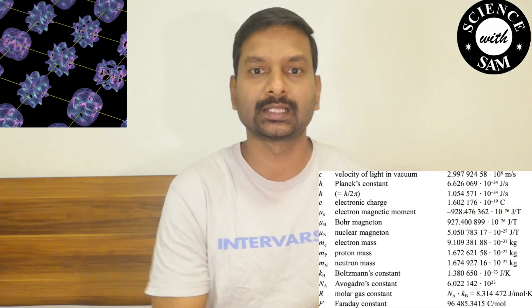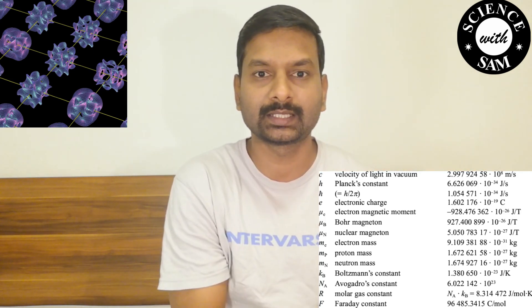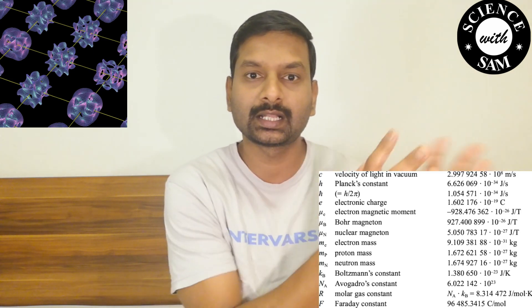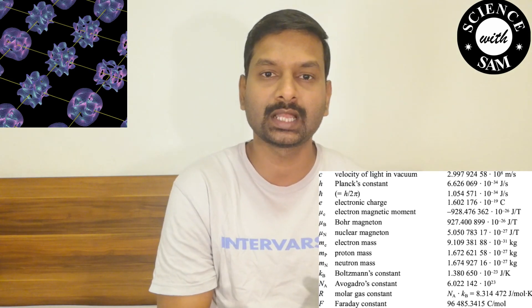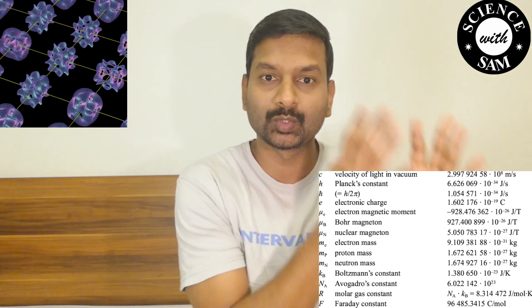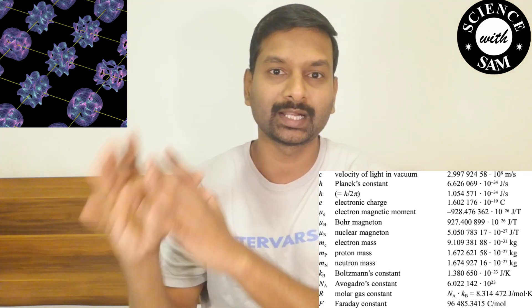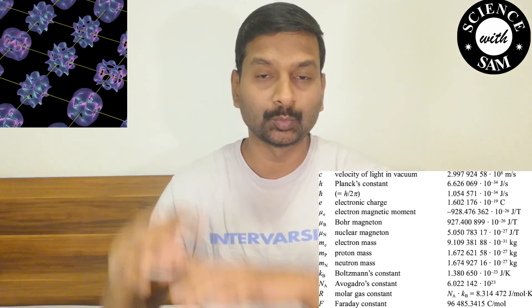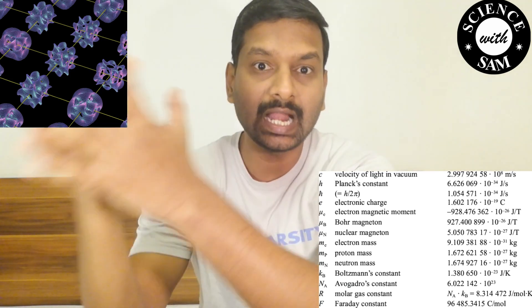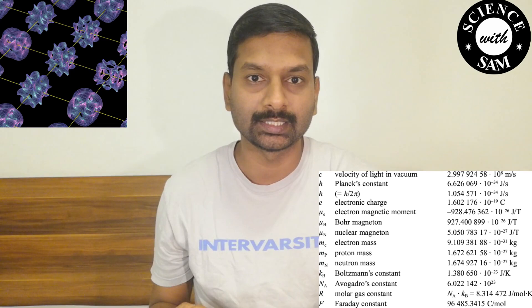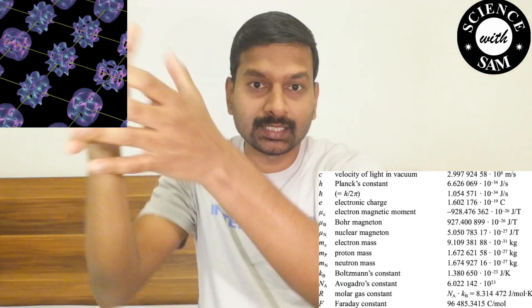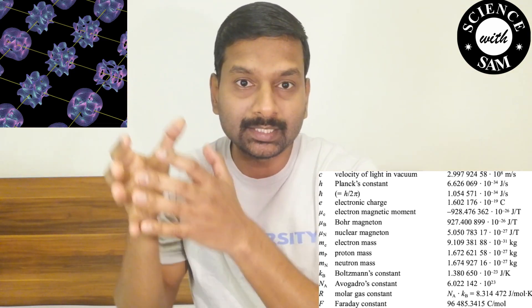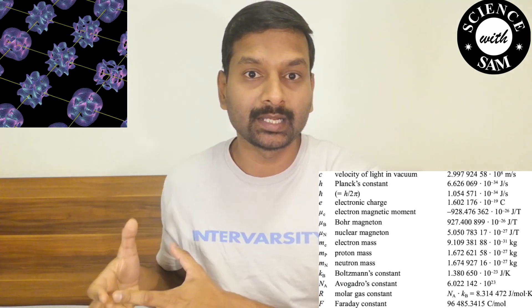Our universe has universal constants — speed of light, gravity, electron mass, magnetic flux — about 20 constants. These constants come from experiment and quantum mechanics theory. In string theory, there are extra dimensions and shapes, and the vibrations must reproduce these constants.